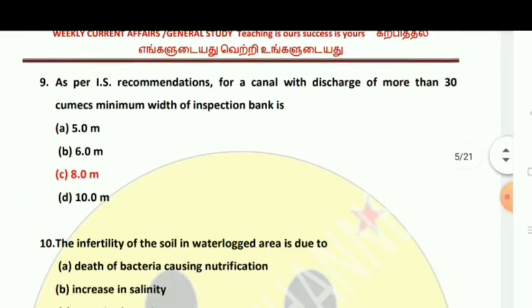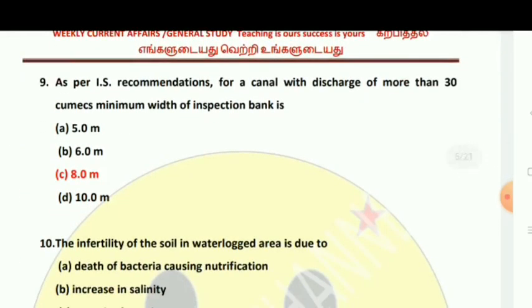As per IS recommendation, for a canal with a discharge of more than 30 cumecs, the minimum width of the inspection bank is about 8.0 meters.